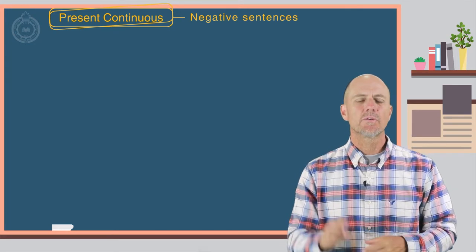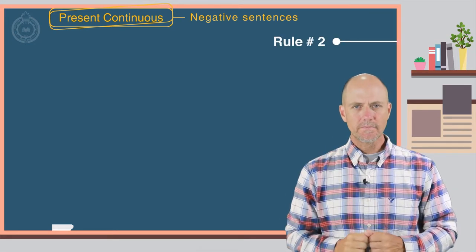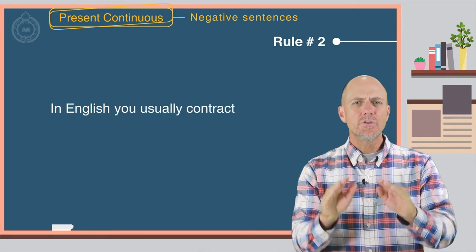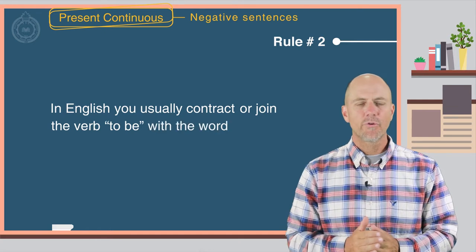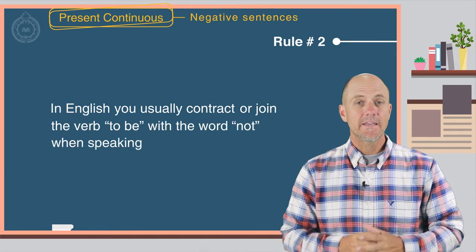Now let's take a look at rule number two. In English, you usually contract or join the verb to be with the word not when speaking.